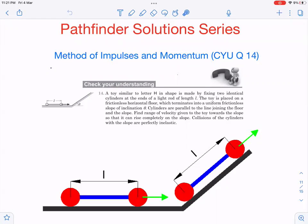Let us read the question and then discuss the concepts required. After that we will go to the solution. This is a toy similar to the letter H, made by fixing two identical cylinders at the ends of a light rod. Very important point: the light rod doesn't have any mass.